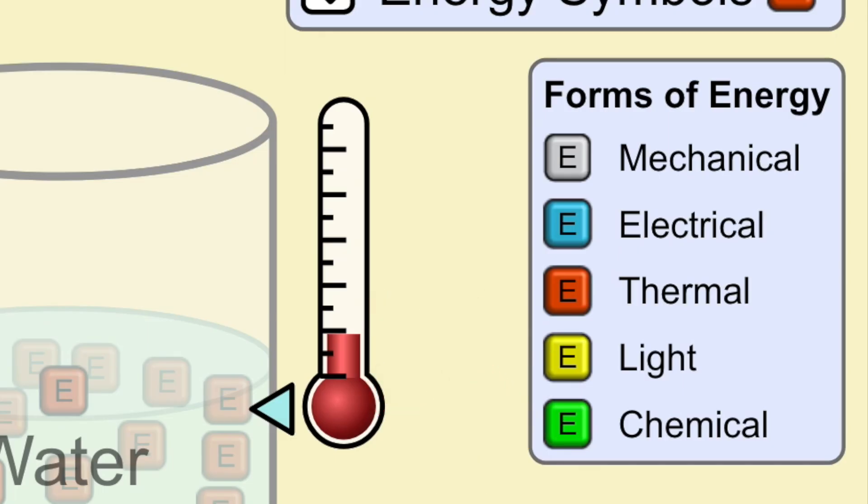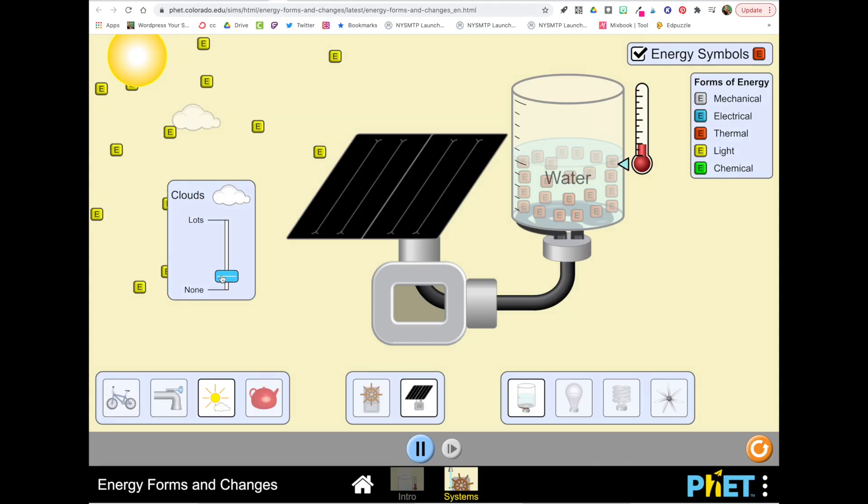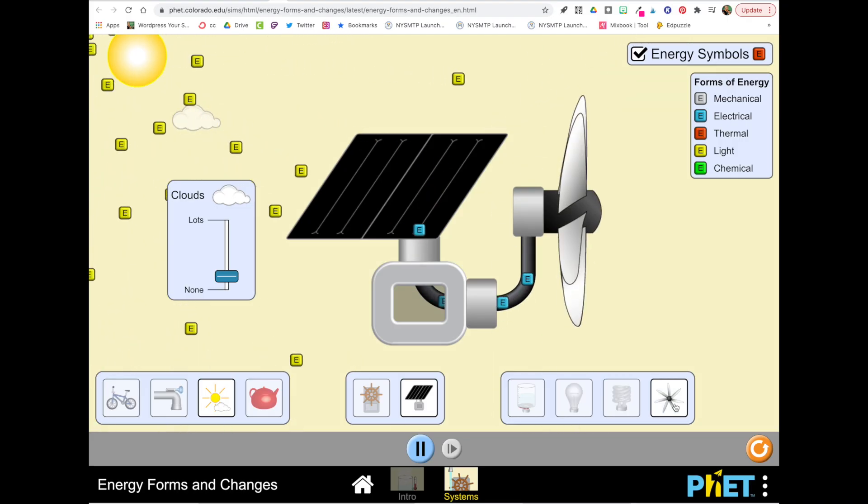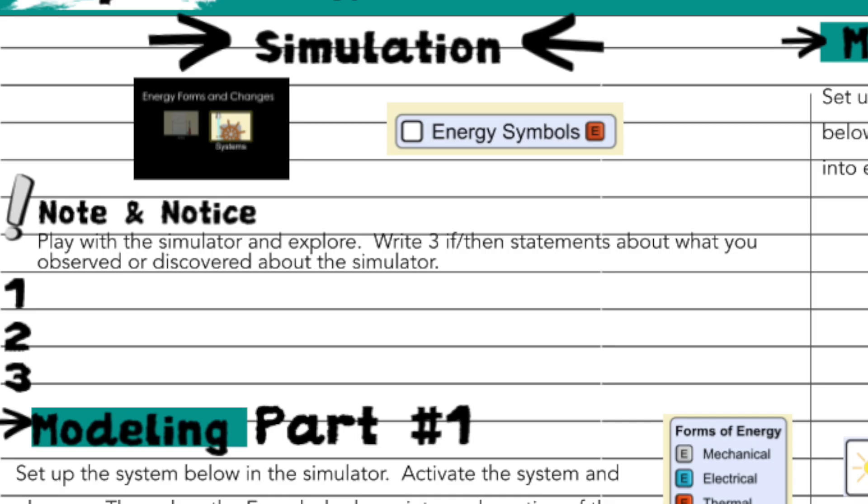As you change a component in the system, you'll want to observe what types of energy are flowing or coming out and moving to other portions of the system. And as you make these observations, you're going to want to record them in your notebook in the note and notice section.